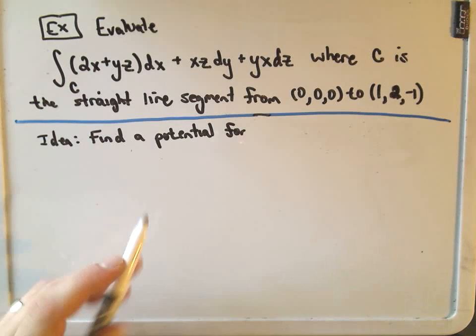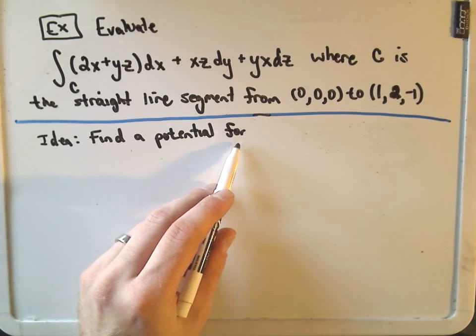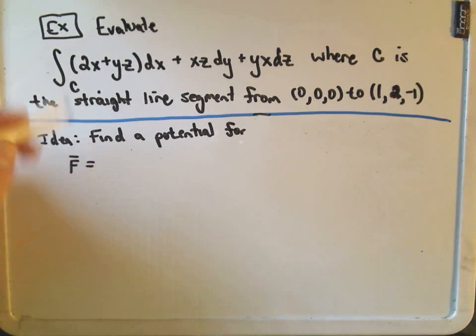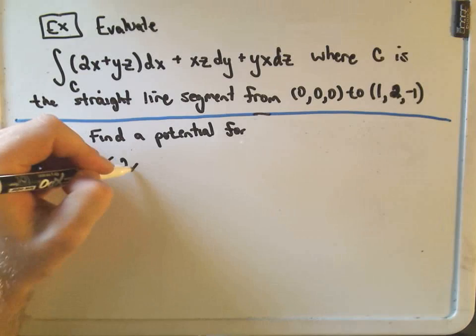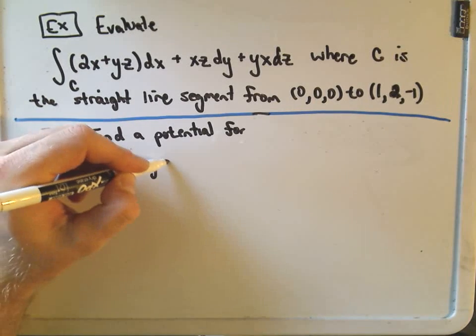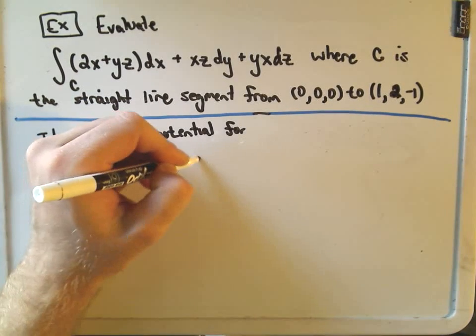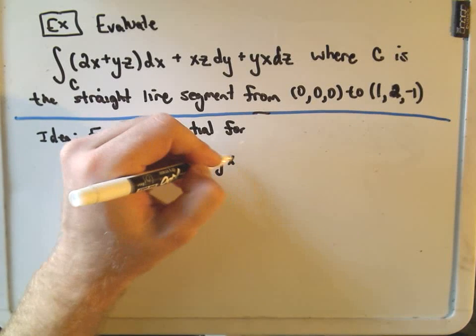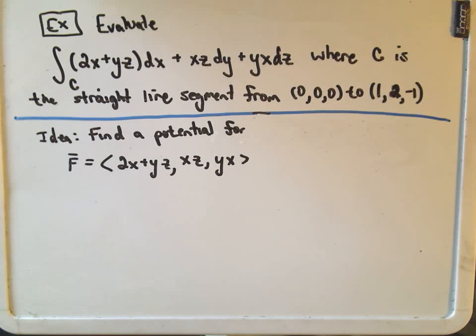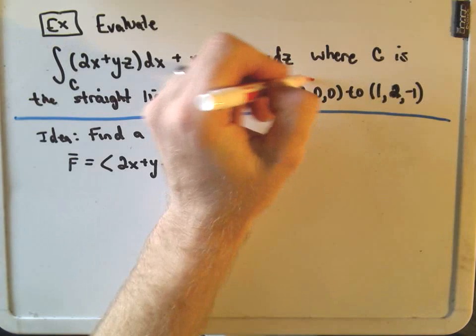So the idea is, what we're going to do is find a potential for the vector field 2x plus yz comma xz comma yx. And then we're simply going to use that. We're just going to plug in the endpoints into that potential function. And we'll be done.